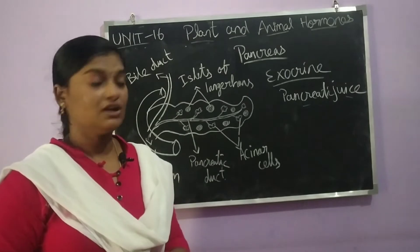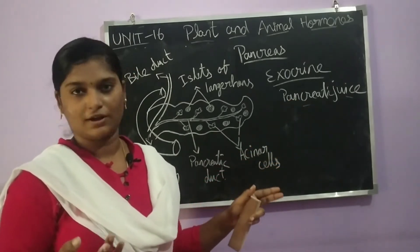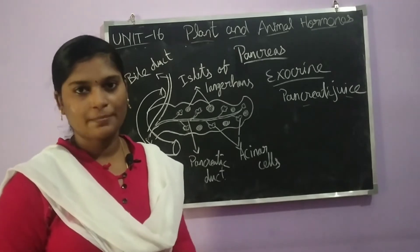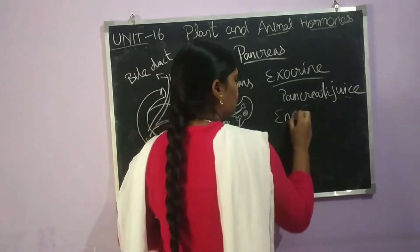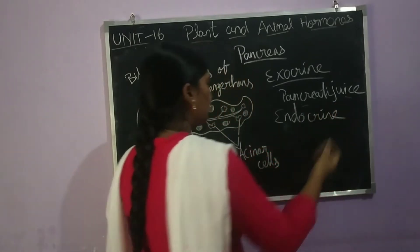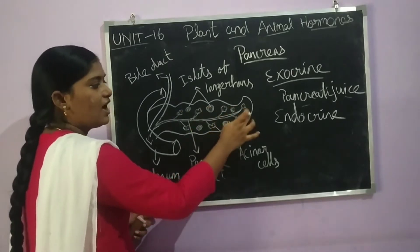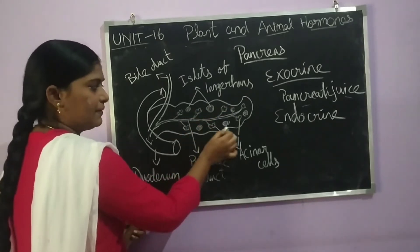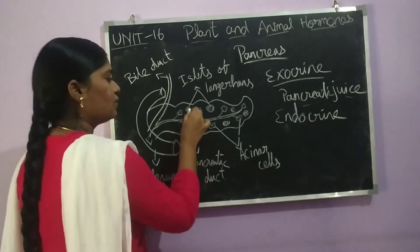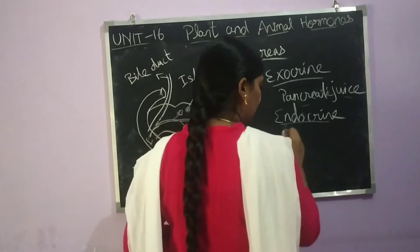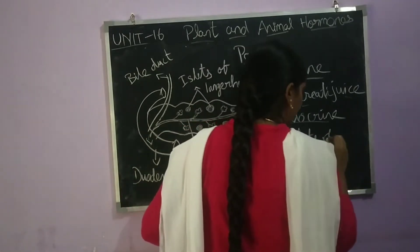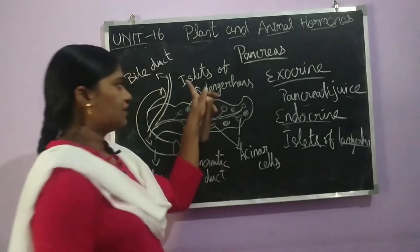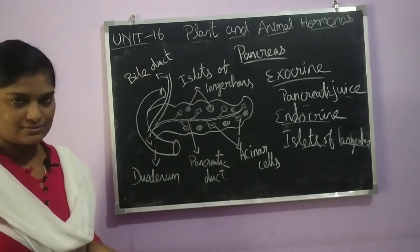For the endocrine function: the pancreatic juice is a digestive juice secreted by the pancreas, also called pancreatic juice since it originates in the pancreas. The endocrine portion of the pancreas is called the Islets of Langerhans. When you look at a histological section, you can identify separate clusters that appear as distinct islands — these are the Islets of Langerhans, which represent the endocrine portion.